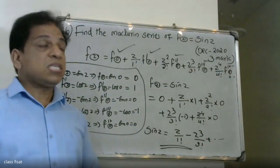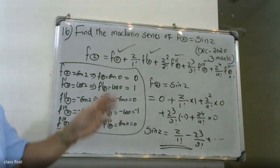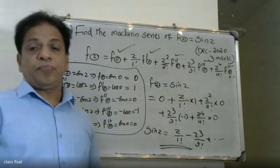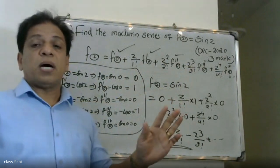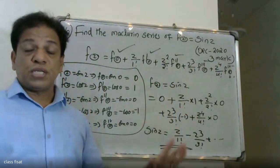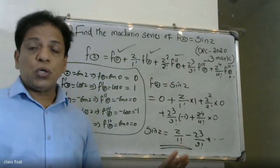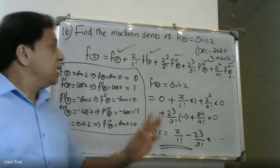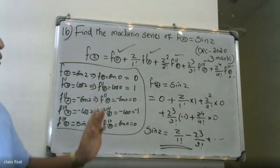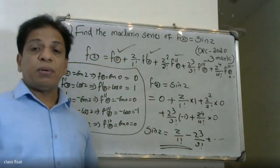In summary, the Maclaurin series for sine z is: f of z equals f of 0 plus z by 1 factorial times f dash 0 plus z squared by 2 factorial times f dash 0 and so on.